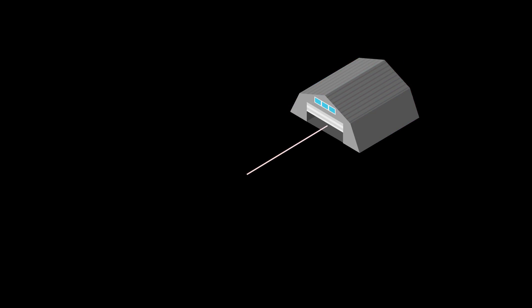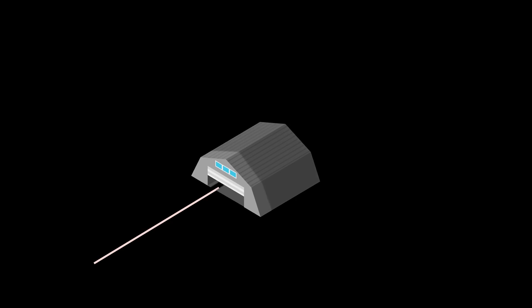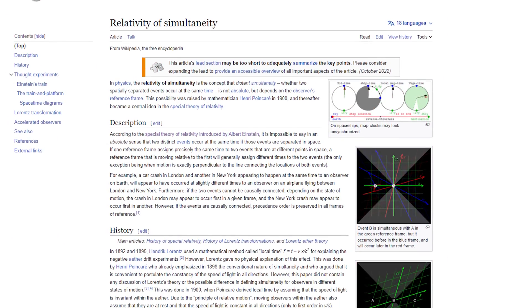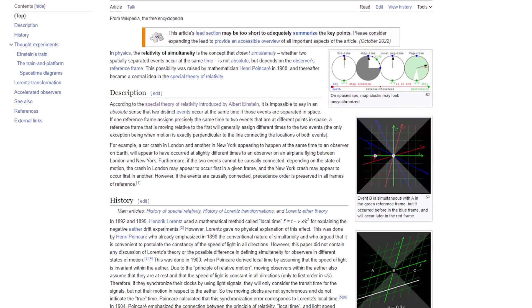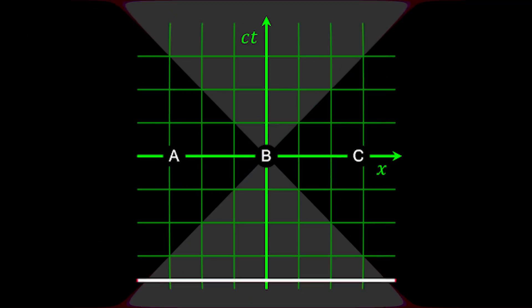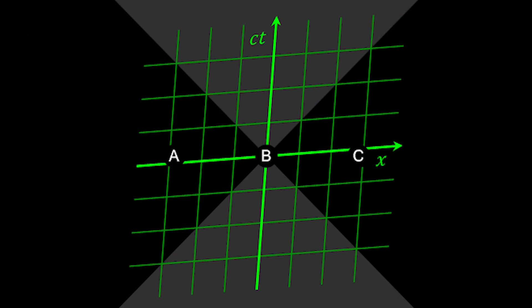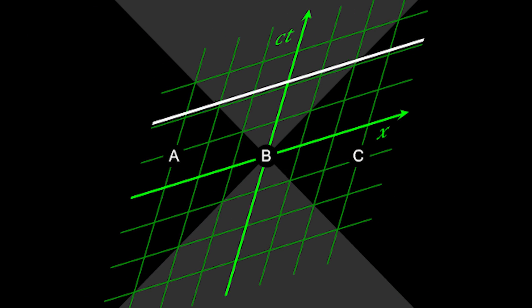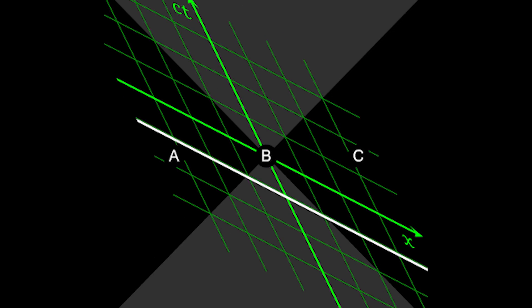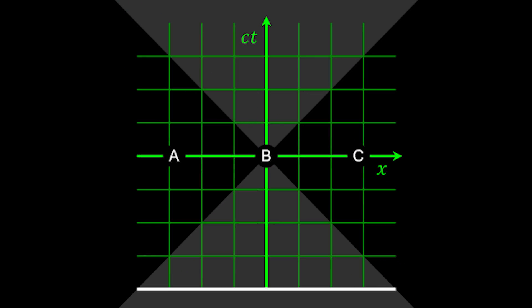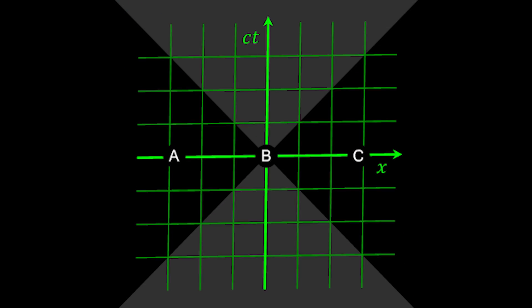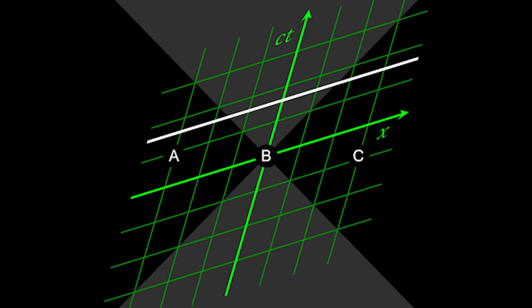From the perspective of the hanger, the stick will fit inside it completely. But simultaneously, from the perspective of the stick, the hanger will seem too small for it. This happens due to the relativity of simultaneity. Events that are simultaneous for one observer in his frame of reference might not be simultaneous for another observer in a different frame of reference.